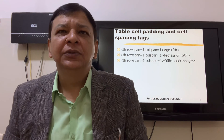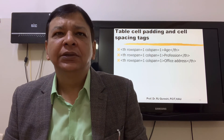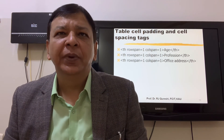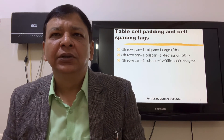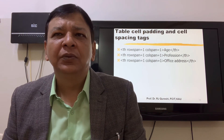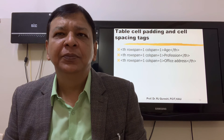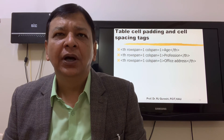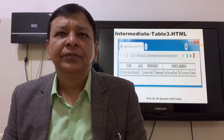Table cell padding and cell spacing tags: th row span equal to 1, column span equal to 1 — age, profession, office address.